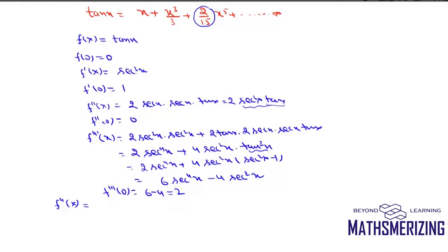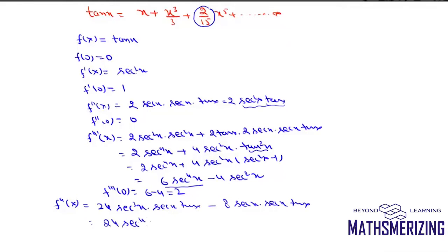Now I'll find the fourth derivative by differentiating 6sec⁴x − 4sec²x. Differentiating gives 24sec³x · sec(x)·tan(x) minus 8sec(x) · sec(x)·tan(x), which simplifies to 24sec⁴x · tan(x) − 8sec²x · tan(x). Putting x = 0, since both terms contain tan(x), f⁴(0) = 0.